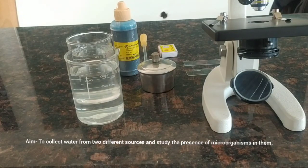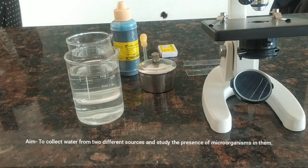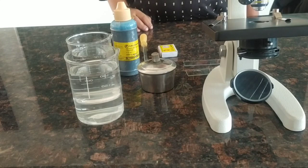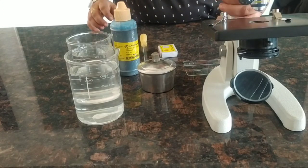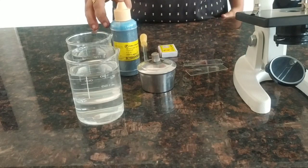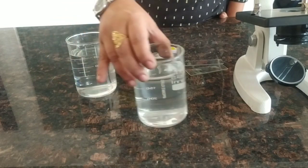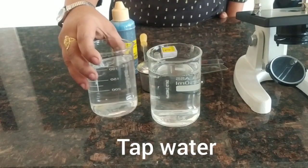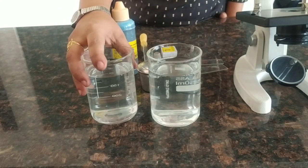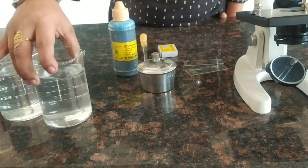Aim: to collect water from two different sources and study the presence of microorganisms in them. Materials required: microscope, tap water, pond water. You can take any other source of water also for this particular experiment.